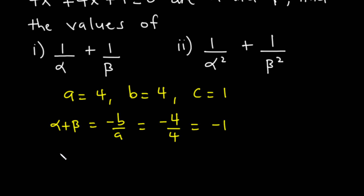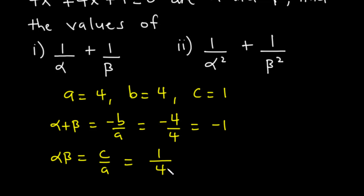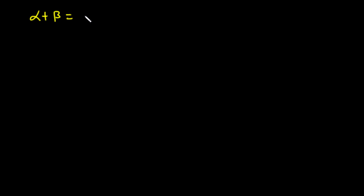We know that alpha beta equals c over a. Since c equals 1 and a equals 4, we have alpha beta equal to 1 over 4. Now let's proceed to solve for part (i) and part (ii), where alpha plus beta is negative 1 and alpha beta is 1 over 4.